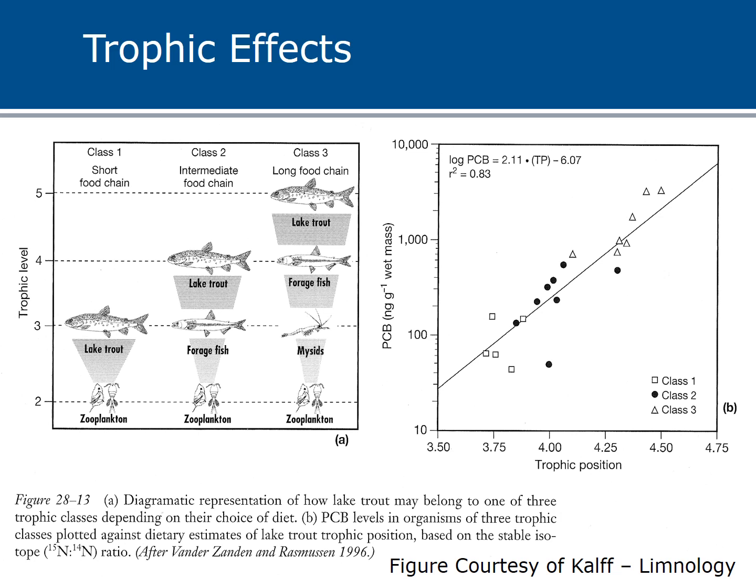The effect also depends on the food web configuration of the system. This example shows lake trout functioning on three different trophic levels: the third trophic level consuming zooplankton directly, the fourth level consuming forage fish that fed on zooplankton, or in a long food chain with the introduction of mysid shrimp — lake trout feeding on forage fish which fed on mysid shrimp, which fed on zooplankton. So lake trout can potentially be carnivores, secondary carnivores, or tertiary carnivores. Because of biomagnification, the higher they are in the food chain, the greater the effect in terms of biomagnification.